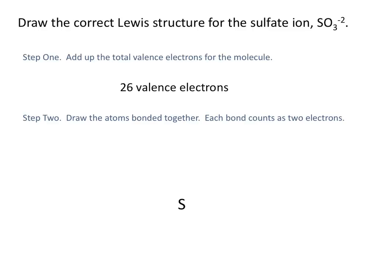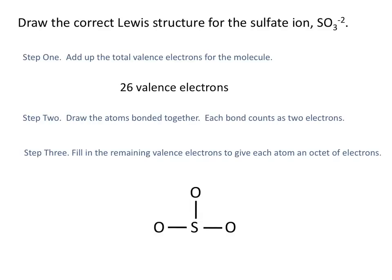Next, we draw the atoms bonded together, with sulfur as the central atom bonded to three oxygen atoms, using up six electrons. We then fill in the remaining valence electrons to give each atom an octet, starting with the oxygen atoms and finishing with the central sulfur atom last, using all 26 electrons.